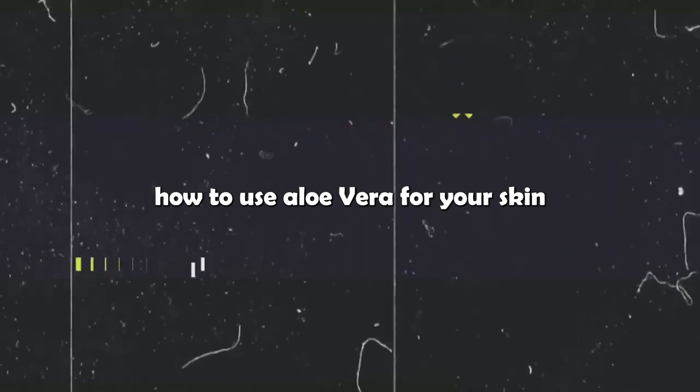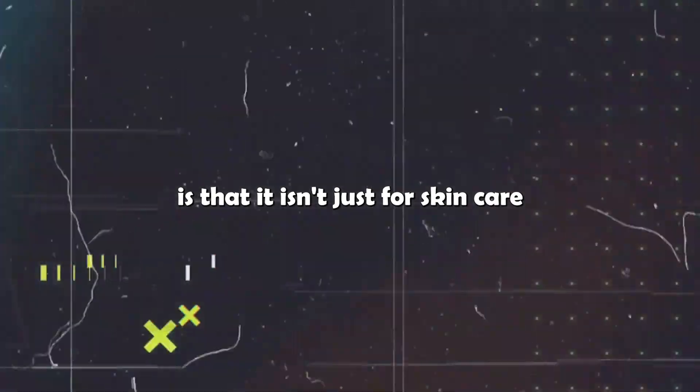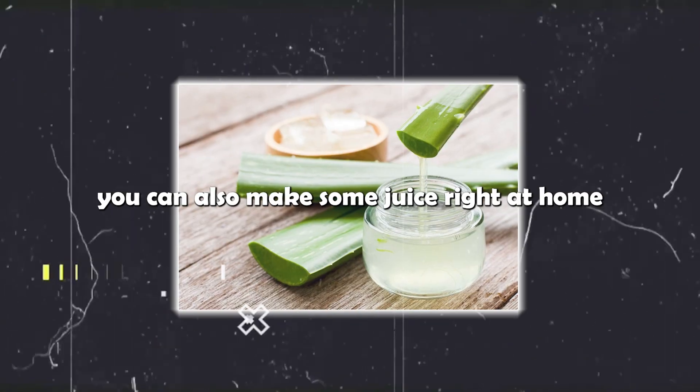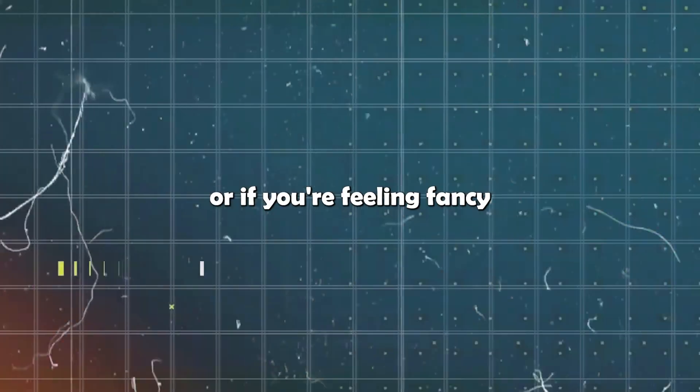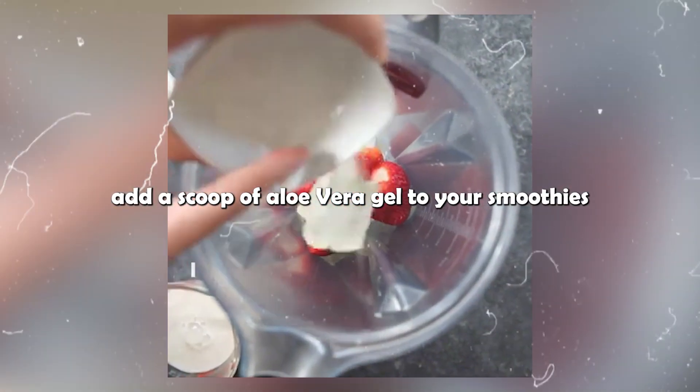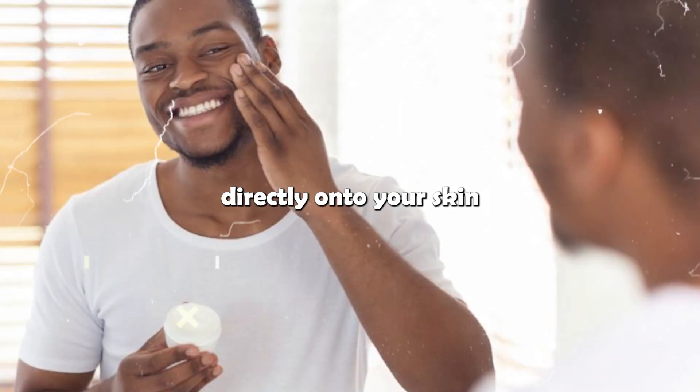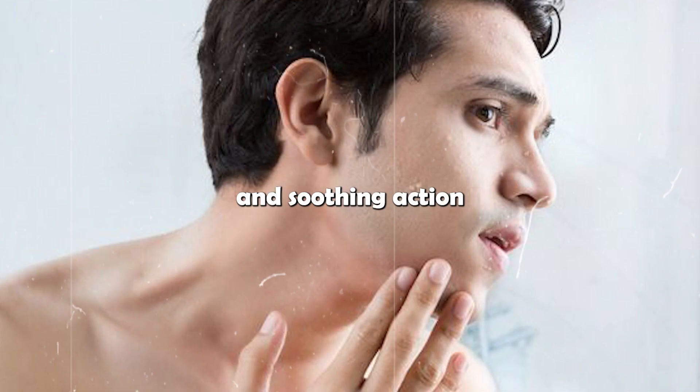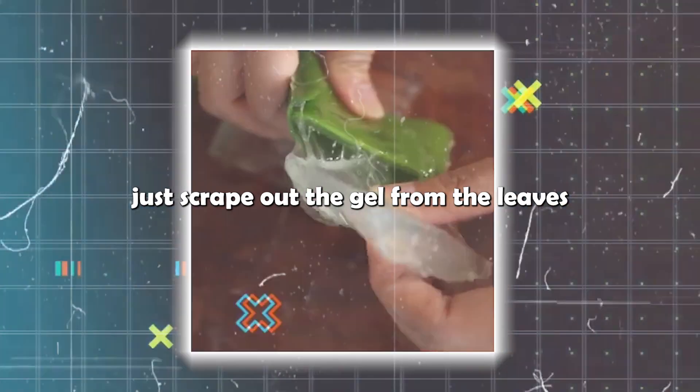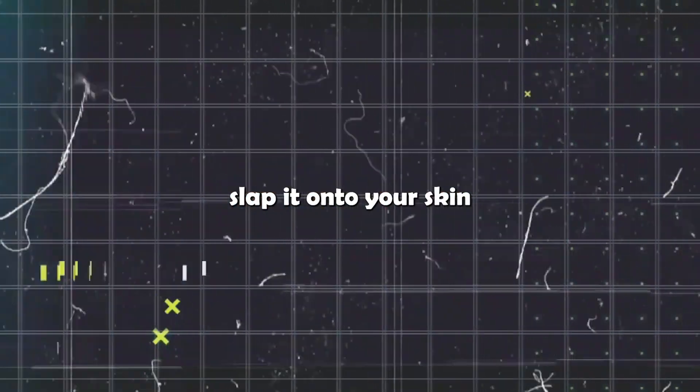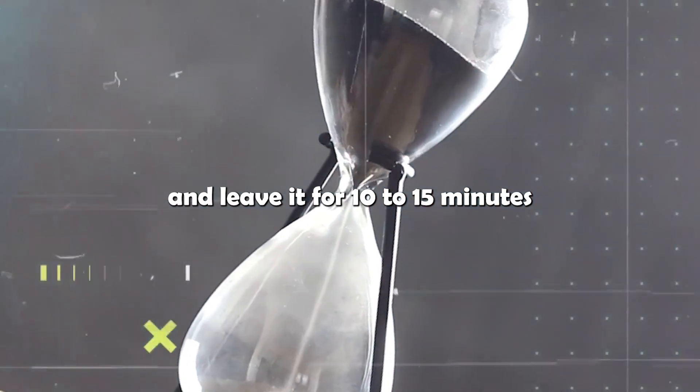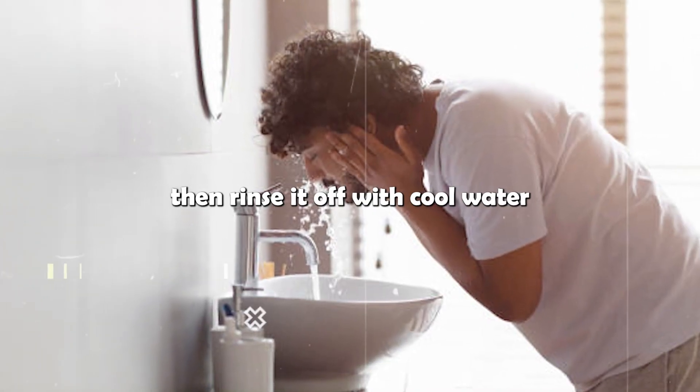How to use aloe vera for your skin. The good thing about aloe vera is that it isn't just for skin care. You can also make some juice right at home. Or if you're feeling fancy, add a scoop of aloe vera gel to your smoothies and drinks. You can also apply aloe vera gel directly onto your skin for some serious hydration and soothing action. Just scrape out the gel from the leaves, slap it onto your skin, and leave it for 10 to 15 minutes. Then rinse it off with cool water.